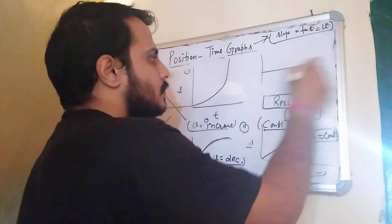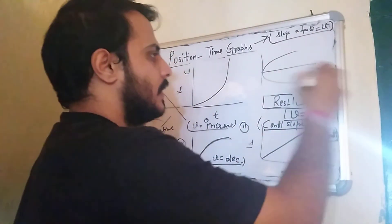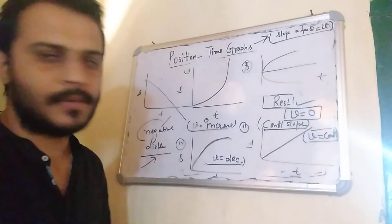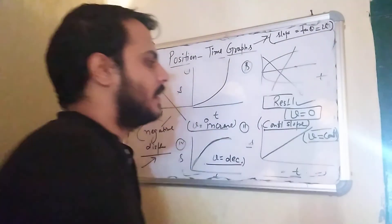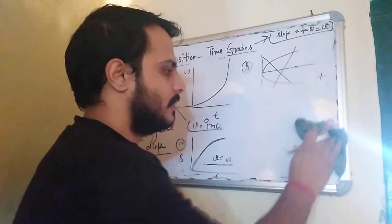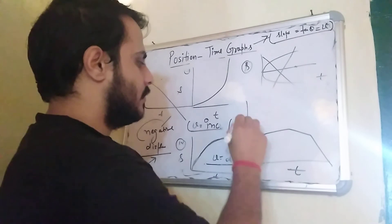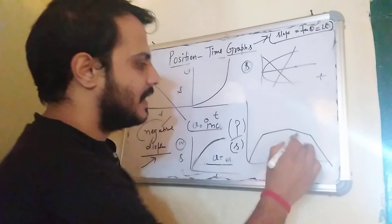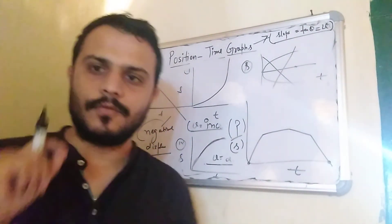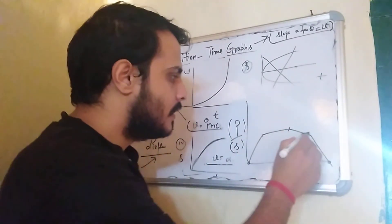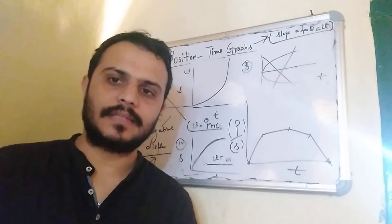This next graph is one which appears in exams. In this graph, at one time you have two different positions, which is not physically possible. And in the last graph, we have different time intervals shown, and this graph clearly tells us that velocity is zero.